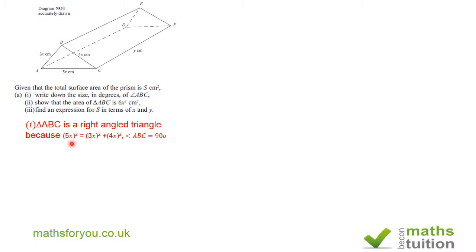So 5X squared equals 9X squared plus 16X squared. Now 16 plus 9 gives you 25X squared. So the triangle ABC is a right-angled triangle. Now, that being the case, this angle, angle ABC, which is opposite the hypotenuse, has got to be 90 degrees. Okay, that's the first part.